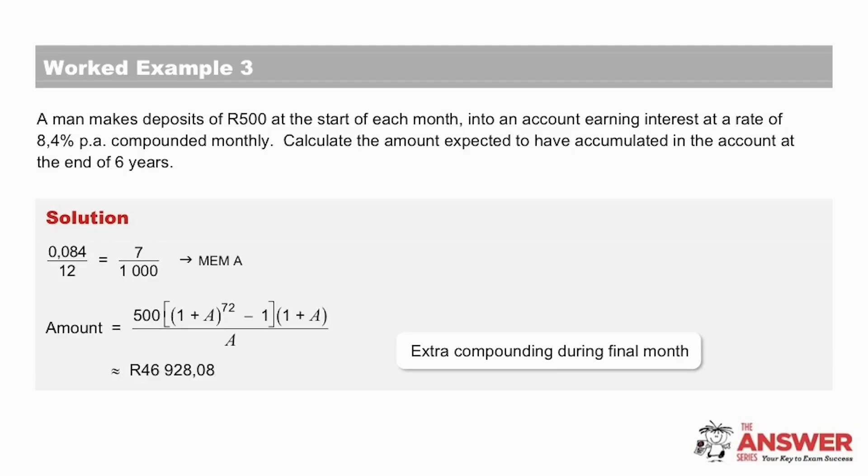You can see how useful it is to use the memory for the interest rate here because it appears in 3 different places. Now if we look carefully at all the details in the question, this man makes deposits of R500 at the beginning of each month for 6 years, which means there will be 72 deposits and for the final month the whole amount will have a chance to earn one more month of interest. So this extra compounding has to take place, giving us an answer of 46,928 rand and 8 cents.